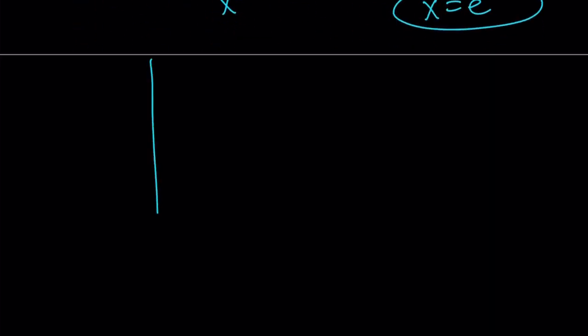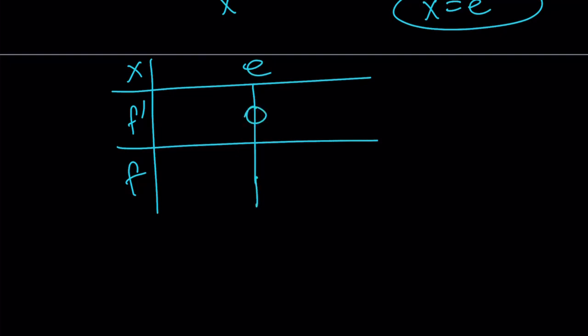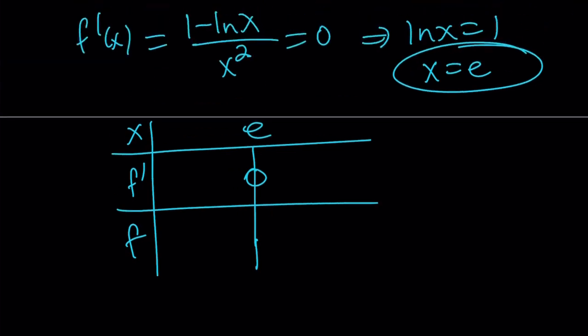Now let's go ahead and make a table. If you like the second derivative test, that's fine too. But here, our critical value is e for the derivative. And I'm going to go ahead and check the derivative to the right and to the left of e. So the derivative of 1 minus ln x. So if x is greater than 1, then 1 minus ln x is going to be negative because ln x is going to be greater than 1.